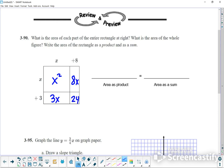So the area as a product, it's just the outside pieces. So as a product, it's just this X plus 8. So you write as a product, X plus 8, put it in parentheses, multiply that by X plus 3. So that's the easy part.